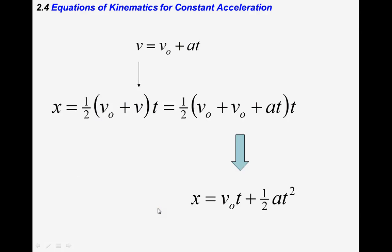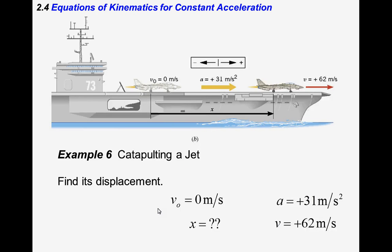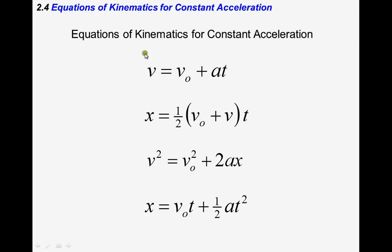We combine these into four equations of kinematics: (1) v = v₀ + at; (2) x = ½(v₀ + v)t, which represents average velocity times time; (3) v² = v₀² + 2ax; and (4) x = v₀t + ½at². These equations are used to solve kinematics problems.